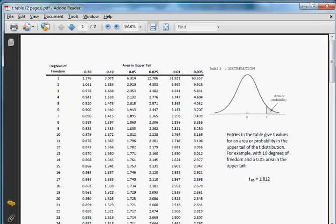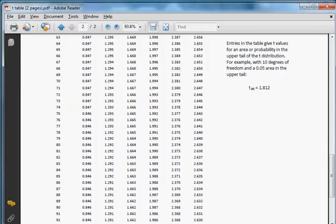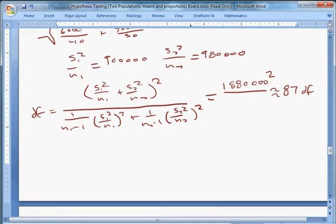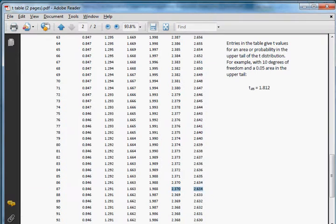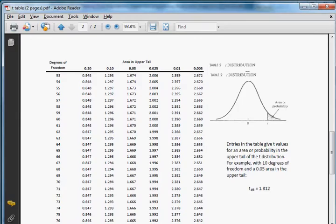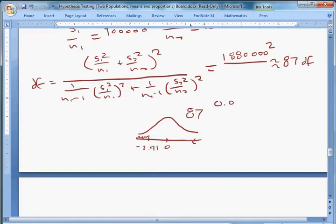Now we know we have 87 degrees of freedom. What we're trying to do is bound our p-value. Our test statistic was negative 2.41. That means we have a t-distribution that had 87 degrees of freedom. We got negative 2.41, we're doing a left-tailed test. It's centered at zero, so we want to know what this area is here. On a t-table, go to 87. 2.41 falls between these two columns, which means our p-value falls between the tops of those two. So 0.005 is less than our p-value, which is less than 0.01.